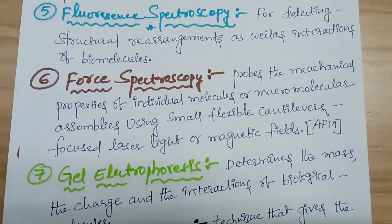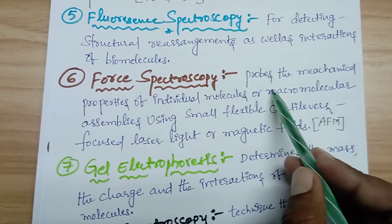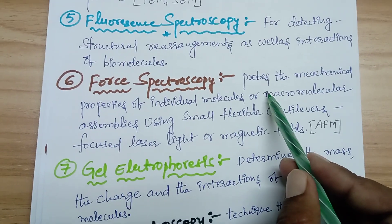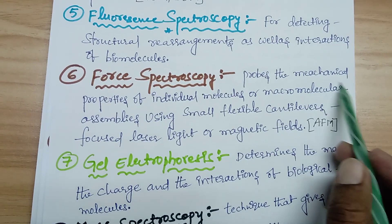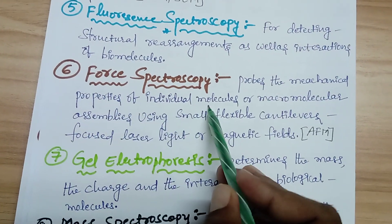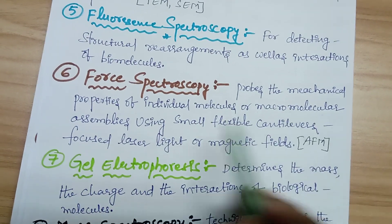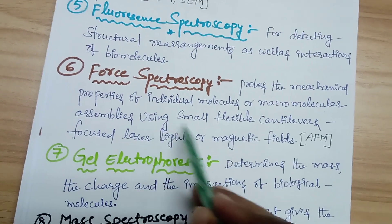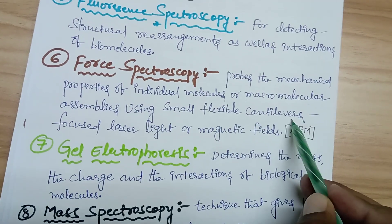The sixth technique is force spectroscopy. Force spectroscopy probes the mechanical properties of individual molecules and macromolecular assemblies using a small flexible cantilever, focused laser light, and a magnetic field.